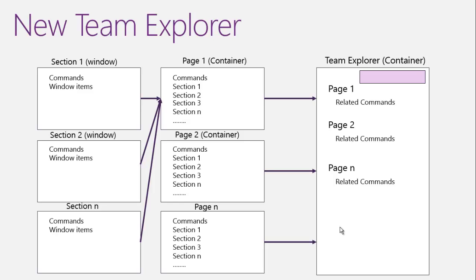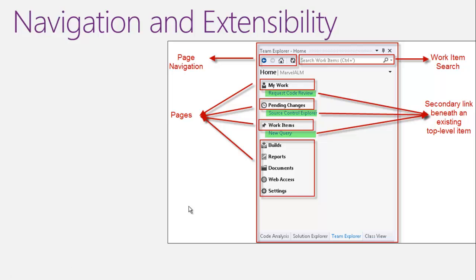The Team Explorer also has a text box for searching inside work items. Currently this search only searches inside work items, but Microsoft may consider adding functionality to search inside different pages and sections in future releases. For navigation and extensibility, at the top section we have a refresh button, a home button that brings us to the home page at any point, back and forward buttons to move between pages and sections, a search box for work items, and the pages for different capabilities.